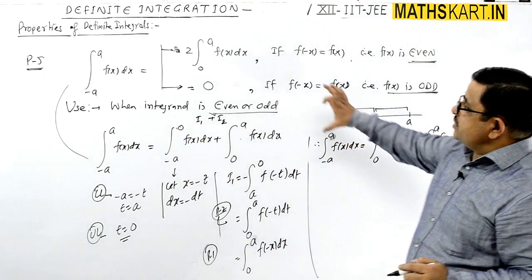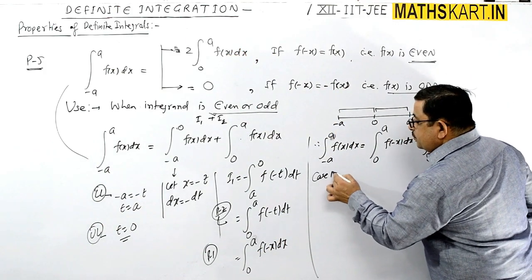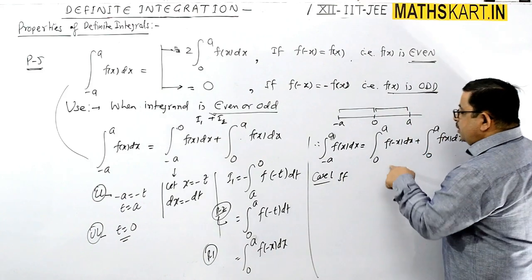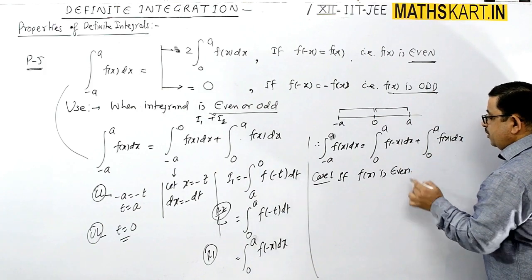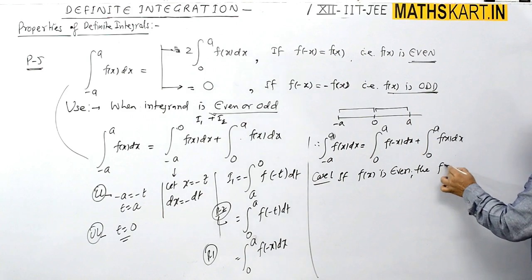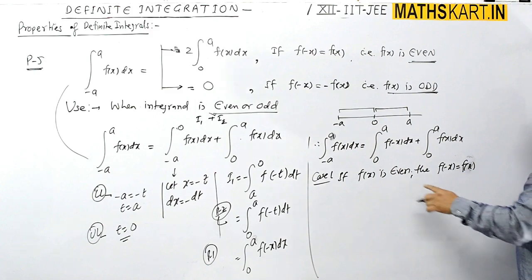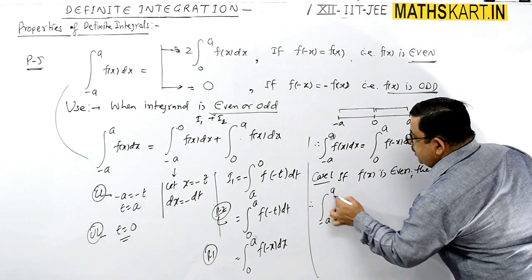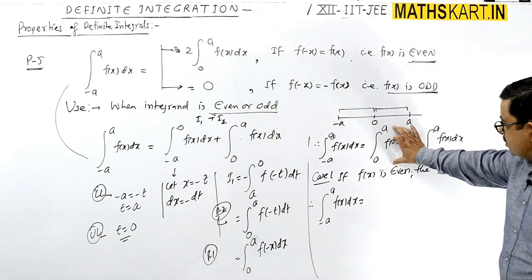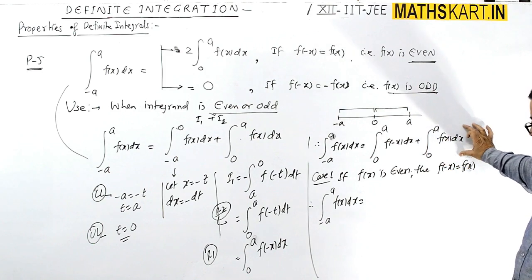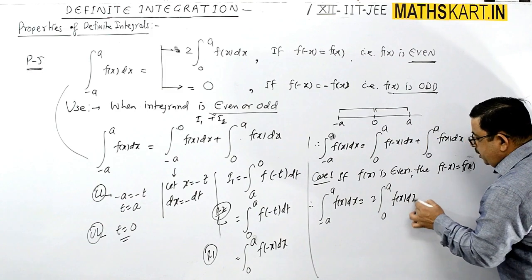Now there are two cases. Case 1: if f(x) is an even function, then f(minus x) equals f(x). So f(minus x) becomes f(x). Therefore, the integral from minus a to a of f(x) dx equals the integral from 0 to a of f(x) dx plus the integral from 0 to a of f(x) dx, which ultimately becomes 2 times the integral from 0 to a of f(x) dx.